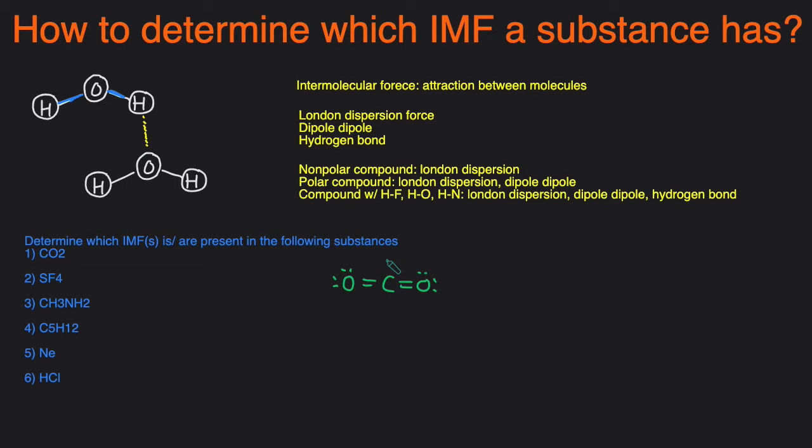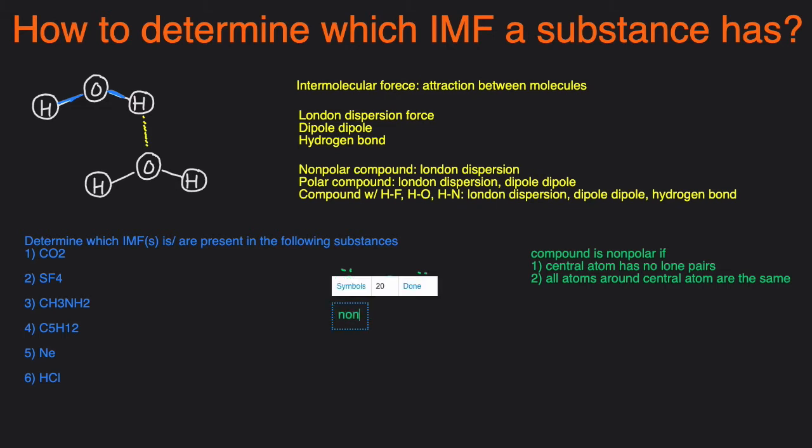Then we have to check whether this compound is polar or nonpolar. And to do that, we can just use a quick checklist. I have a video where I go over this in detail. But to save time, I'm going to type out this checklist right here. So a compound would be nonpolar if the central atom, the middle atom, has no lone pairs, and all the atoms surrounding the central atom are the same. You can see carbon meets criteria number one because carbon doesn't have any lone pairs on it. And it also meets criteria number two because both the surrounding atoms are oxygen. So that means that carbon dioxide would be nonpolar. And since it's nonpolar, it means that it only has London dispersion forces.